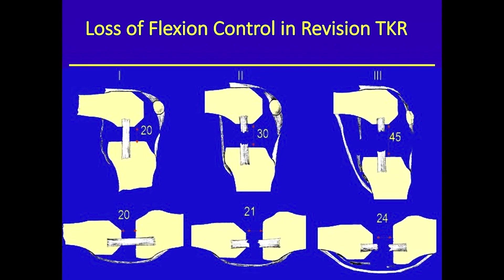This is a really important slide. Kenny Krakow and a fellow took cadavers, did all the cuts, and on the far left they had equal extension and flexion gaps. When they made multiple puncture wounds and damaged just the collaterals, the extension gap only opened from 21 to 21, but the flexion gap went up to 30. When they disrupted the posterior capsule, the extension gap only went to 24 whereas the flexion gap went up to 45.